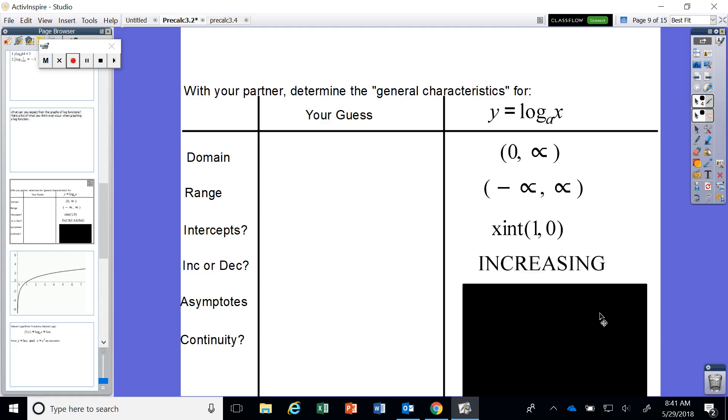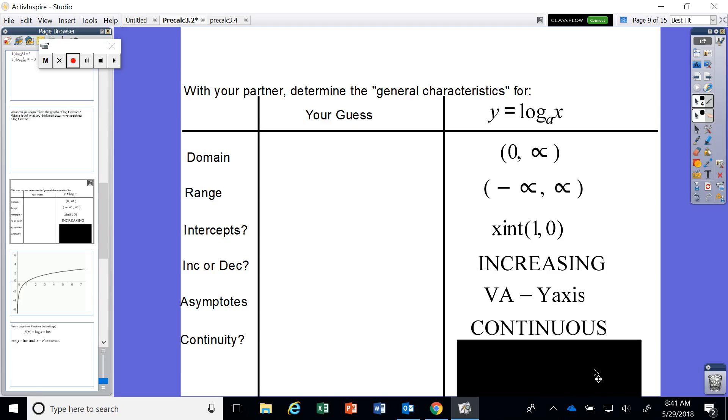What about our asymptotes? Well, remember what we said. Before, the exponential function had an asymptote at the x-axis. Well, now we are specifically saying it's the inverse, so we should be expecting an asymptote at the y-axis, and it is still continuous as well too.